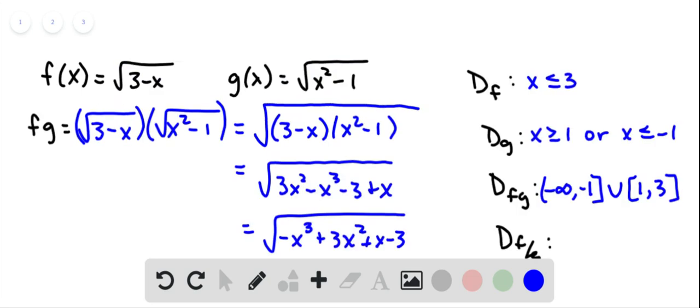Now how about the domain? So remember in the previous problem, all we had to do to get the domain of f plus g, f minus g, and f times g was to find the intersection of the two separate domains. But that's not the case for the quotient.